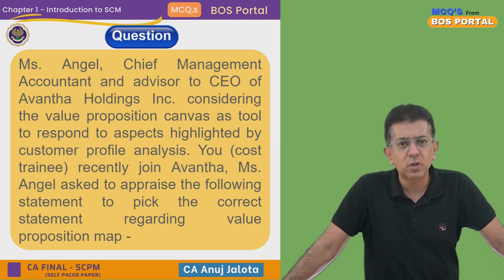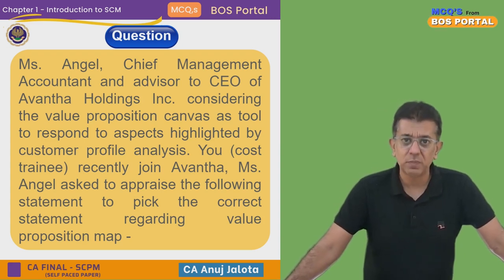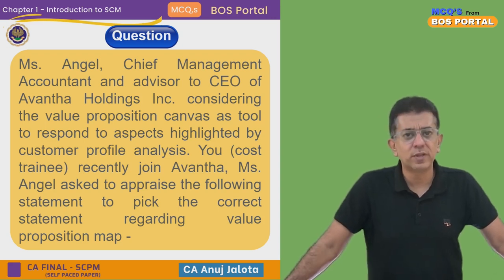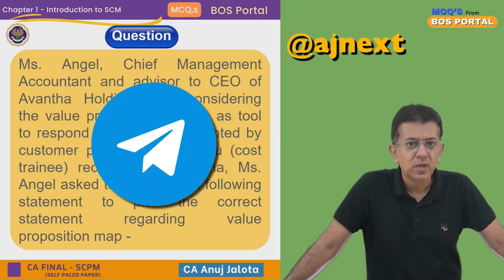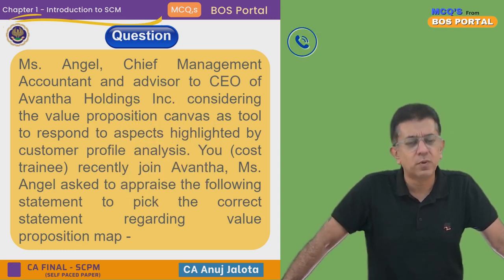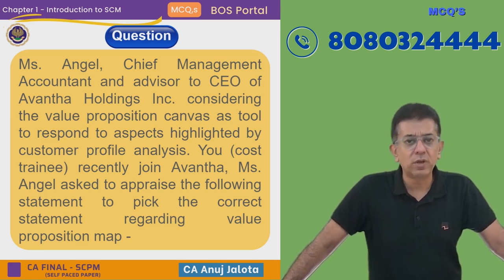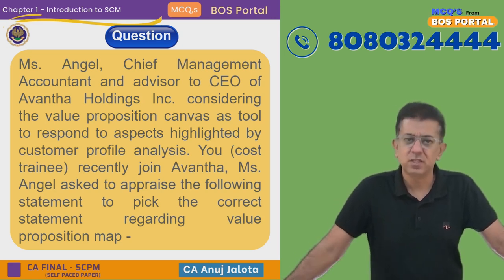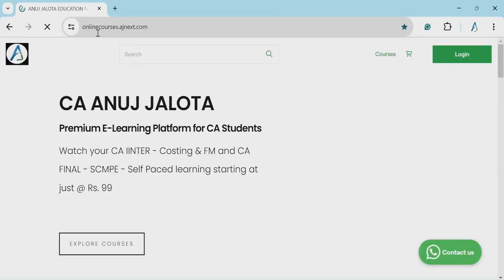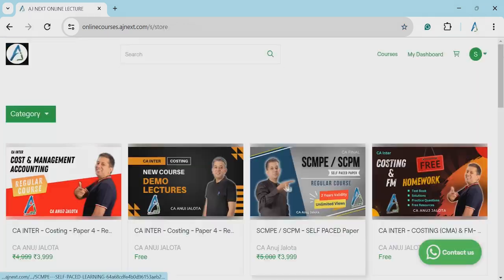In case you have any doubt regarding this subject, please message us on our Telegram ID that goes by the name of @innext. In case you want to talk in person, our phone number is 8080-32444. If you wish to enroll for a complete course, the link is in the description. You can directly enroll — there's absolutely no need to call us. Your lectures will immediately start at that particular time.